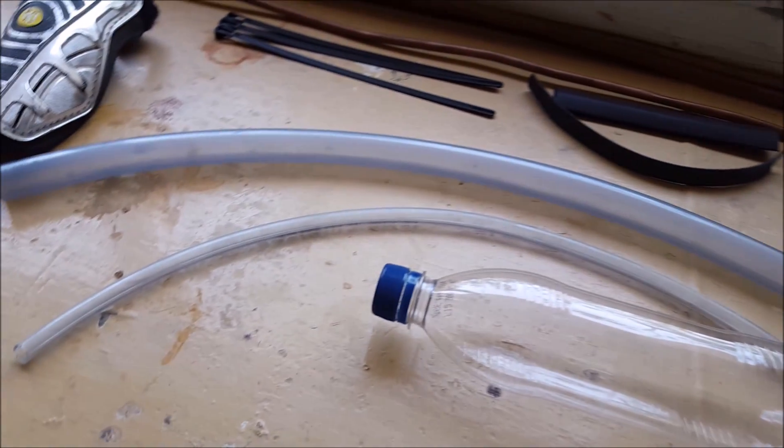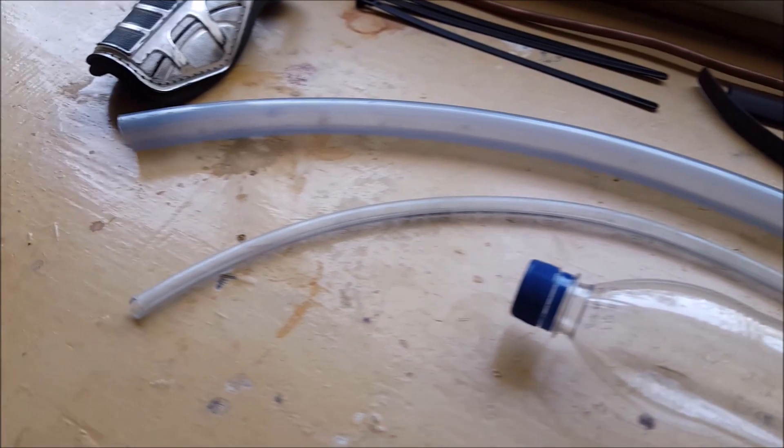This should fit over the pipe nipples. And finally 1 m of 10 mm vinyl tubing.